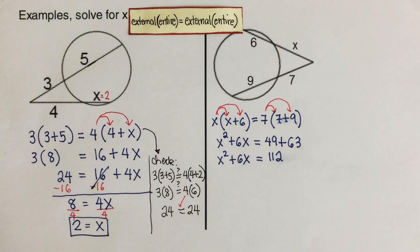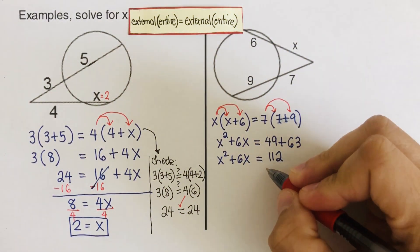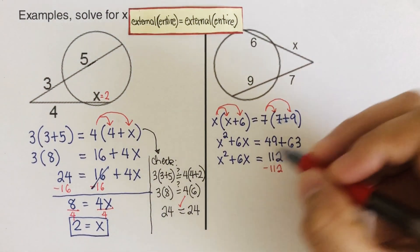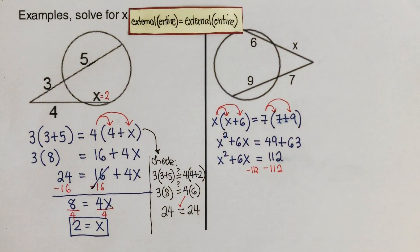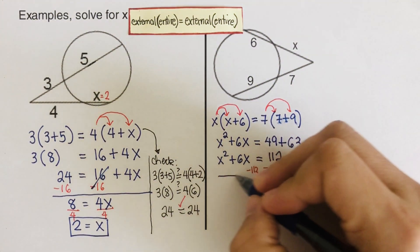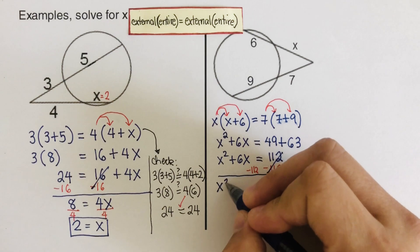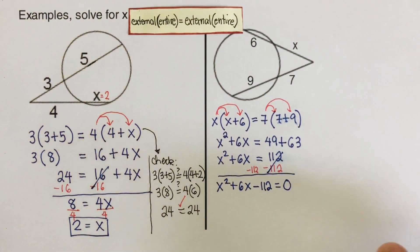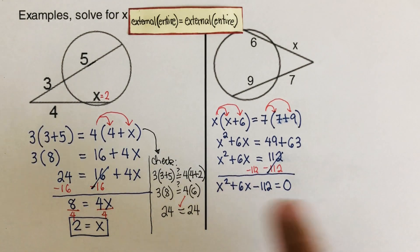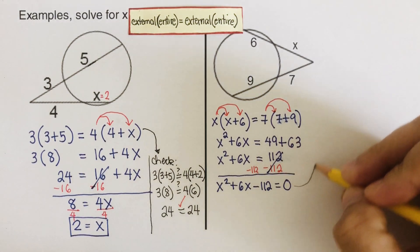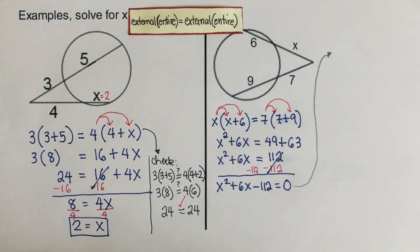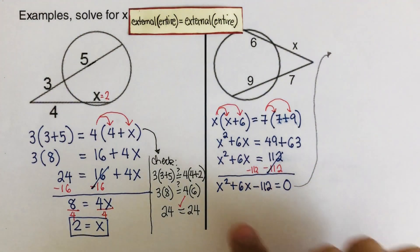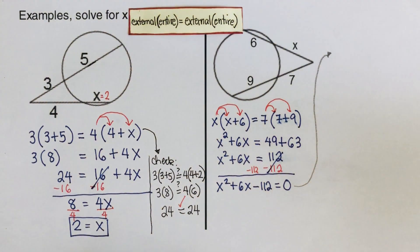To solve for x, we subtract 112 from both sides so we can apply the zero product property. The equation becomes x squared plus 6x minus 112 equals zero. To proceed, we need to change this into factored form, and we'll use the box and diamond method to factor this trinomial.